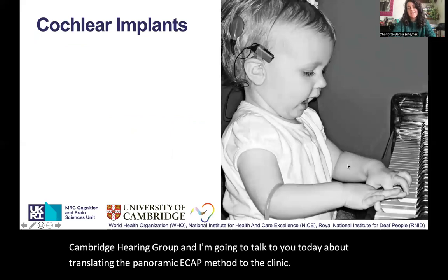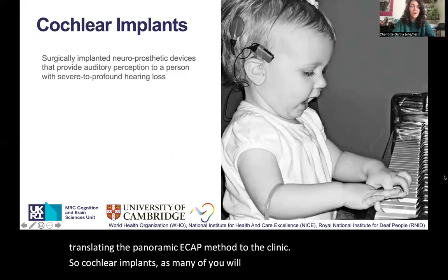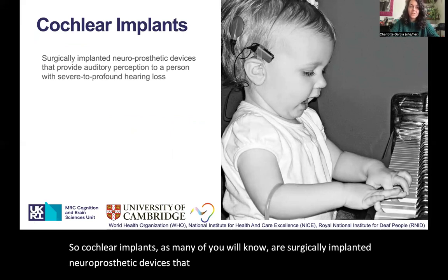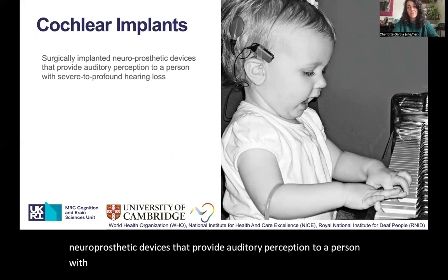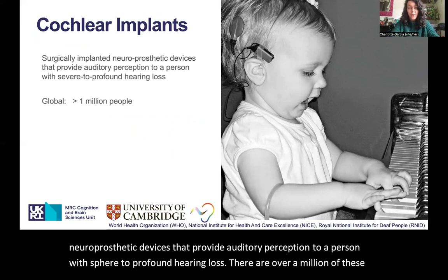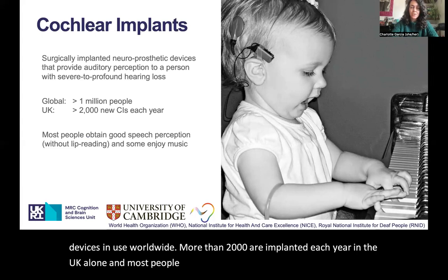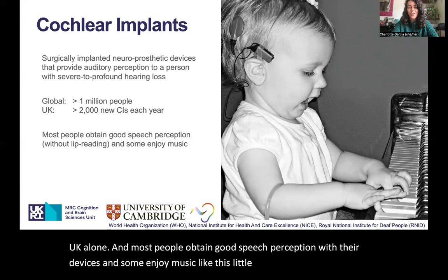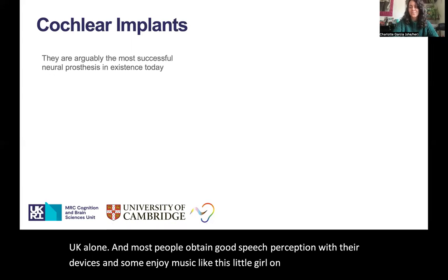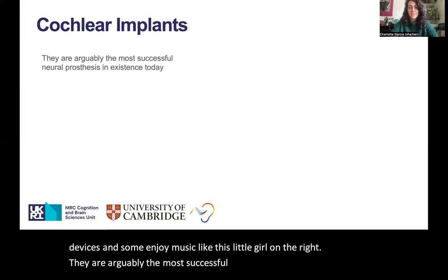Cochlear implants, as many of you will know, are surgically implanted neuroprosthetic devices that provide auditory perception to a person with severe to profound hearing loss. There are over a million of these devices in use worldwide. More than 2,000 are implanted each year in the UK alone, and most people obtain good speech perception with their devices, and some enjoy music. They are arguably the most successful neuroprosthetic in existence today.